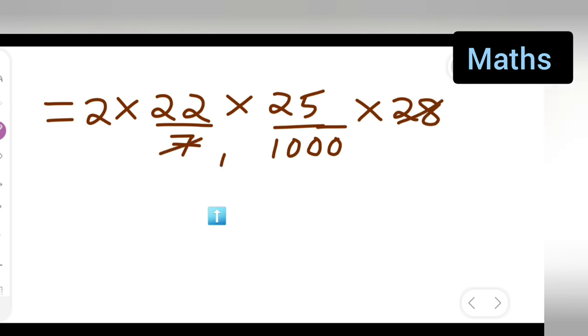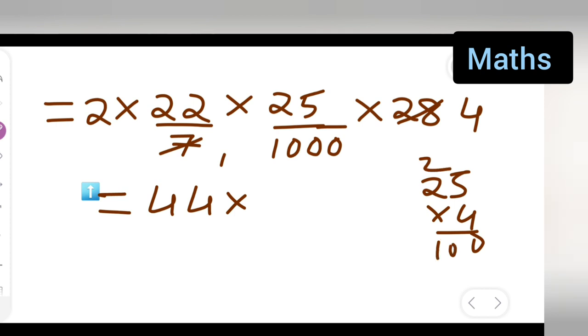Seven into 28 is 4 times. Now multiply: 25 × 4 = 100. So when you multiply 100 × 44 you will get 4400.